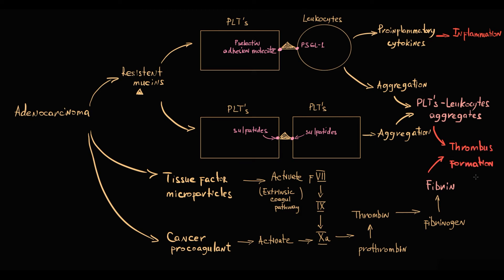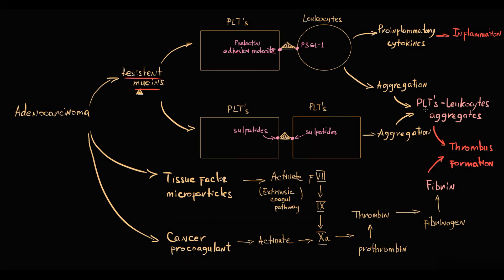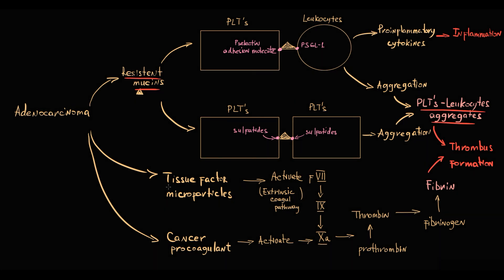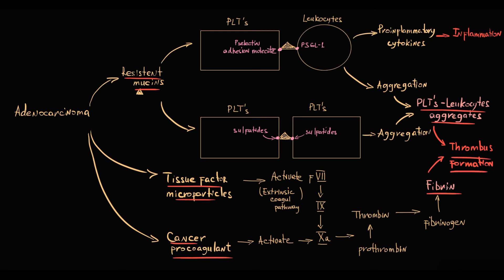So overall we see that the production of mucins induces events of primary hemostasis, and in this case platelet leukocyte aggregates are analogous to platelet plug. And tissue factor together with cancer procoagulant induce events of secondary hemostasis that stabilize platelet leukocyte aggregates, and this results in formation of a thrombus inside blood vessels.